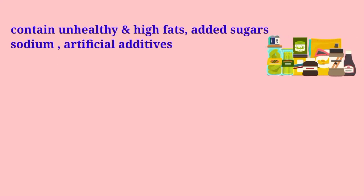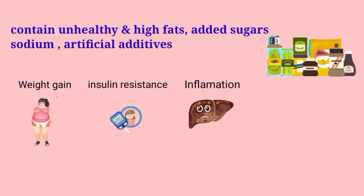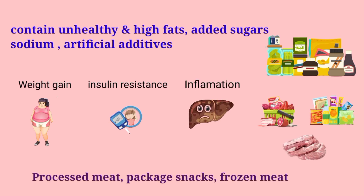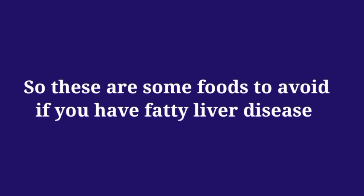The final category is processed and packaged foods. These foods contain unhealthy amounts of fats, added sugars, sodium, and artificial additives, which can induce extra weight gain, insulin resistance, and liver inflammation. Examples include processed meats, packaged snacks, and frozen meals. These are some of the items to avoid or limit if you have fatty liver disease.